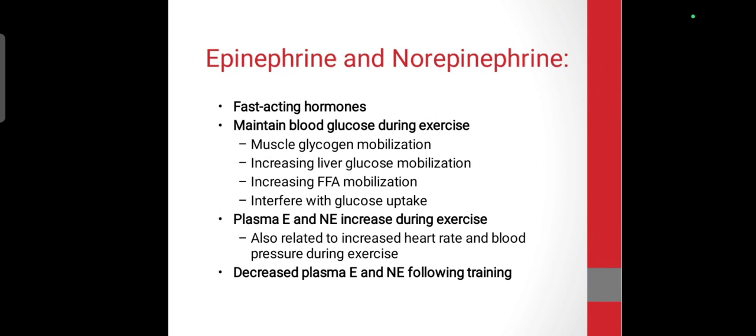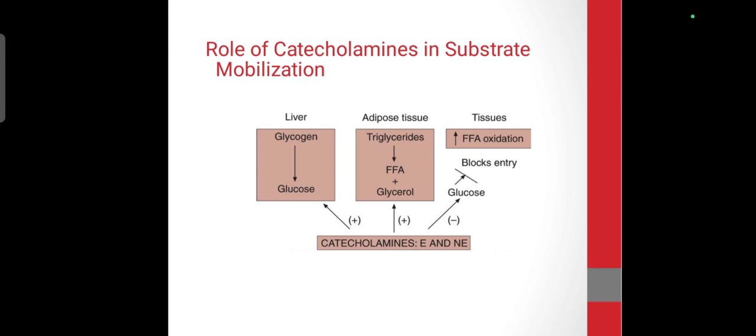Fast-acting hormones — epinephrine and norepinephrine — maintain plasma blood glucose during exercise through muscle glycogen mobilization, liver glucose release, free fatty acid mobilization, and glucose regulation. These are very important hormones because they increase heart rate and blood pressure during exercise. When you train a lot, these responses are automatically decreased — a trained athlete shows a lower catecholamine response.